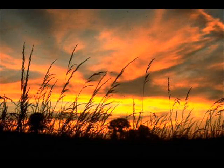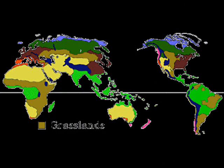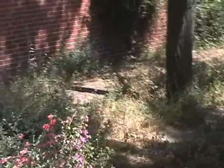Tropical grasslands are located closest to the equator and are hot all year round. Temperate grasslands are farther from the equator and have hot summers and harsh winters. Grasslands in general are located on either side of the two desert belts that circle the earth. Grasslands cover about one-fourth of the earth. Their climate is normally warm and can get very hot.